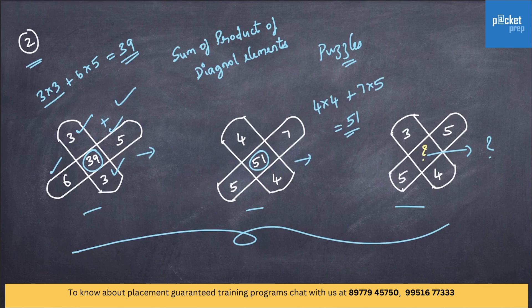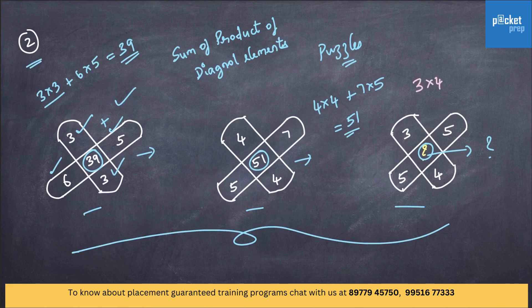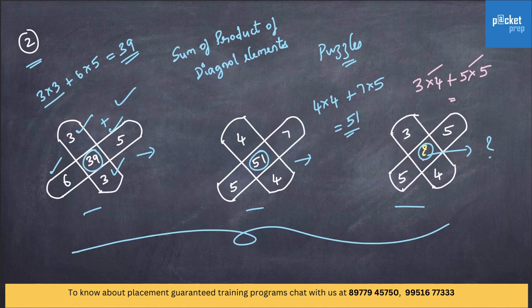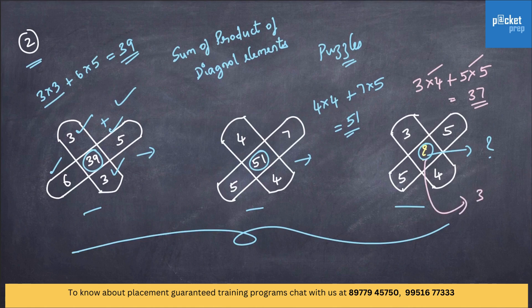Now, in order to get 51, 4 into 4 plus 7 into 5, which is equal to 51. Similarly, you can easily find out the missing term: that is 3 into 4 plus 5 into 5, 12 plus 25, which is equal to 37. So, the missing term is 37. Hope you all understood this.